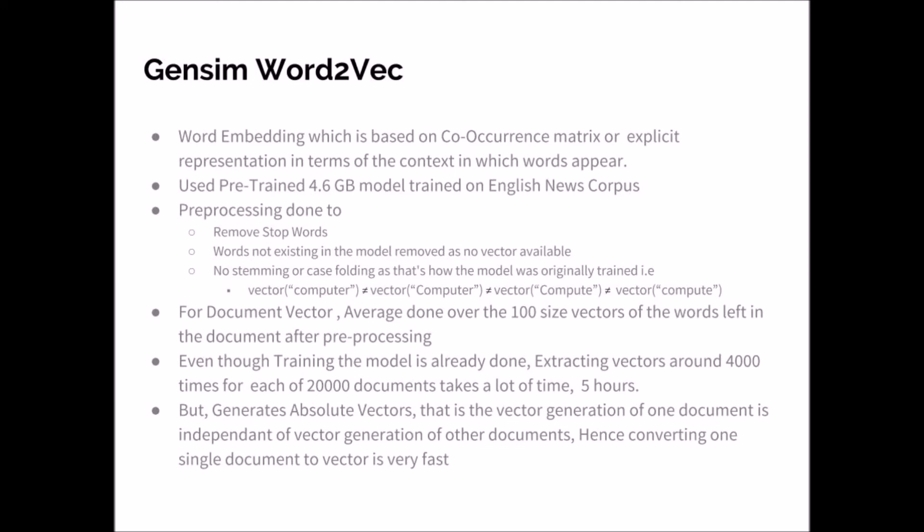In a document, we removed stop words, took important words, took their vectors and averaged them all to generate the document vector. It takes a lot of time comparatively. For example, 5 hours for 20,000 documents. But generates all absolute vectors.